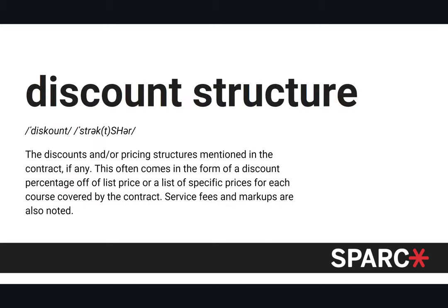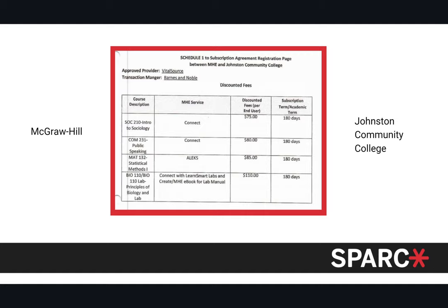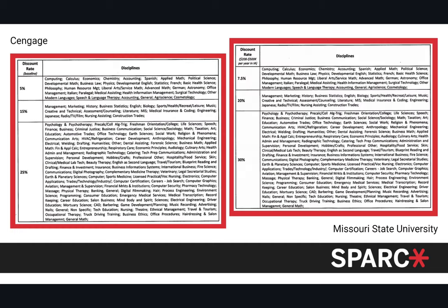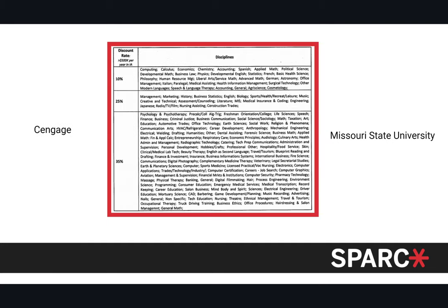Discount structures show how pricing is mentioned in the contract. The McGraw-Hill contract shows discounted fees with exact per-book costs. Cengage does it differently — using Missouri State as an example: if an institution spends less than $200,000 a year in inclusive access, discounts are 5%, 15%, and 25% depending on the course tier. Spending $200,000–$500,000 bumps discounts to 7.5%, 20%, and 30%. Above $500,000 per year, discounts reach 10%, 25%, and 35%.